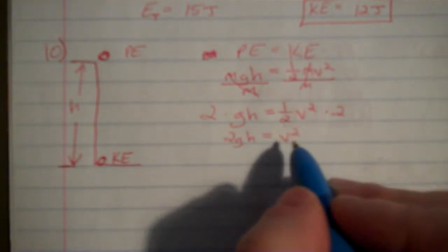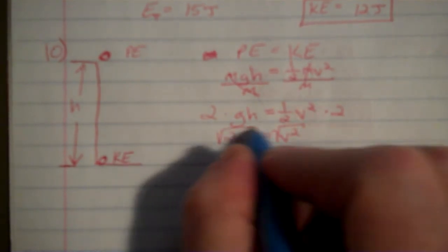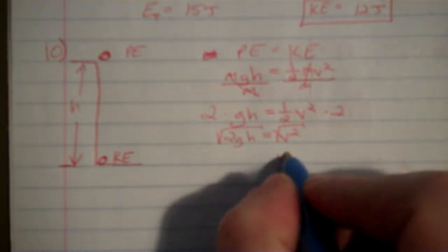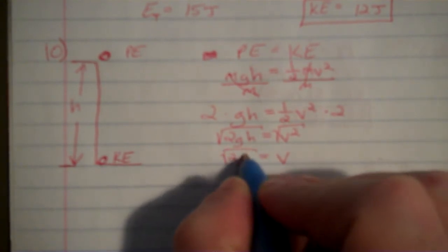The last thing I have to do is get just v and not v squared. So I take the square root of both sides, and I have v equal to square root of 2gh.